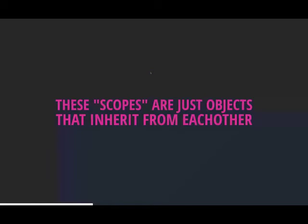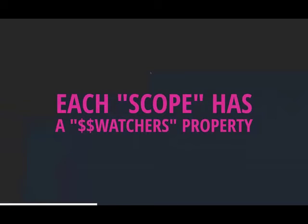These scopes are objects that inherit from each other. Isolate directive scopes break this inheritance chain. Each scope — from ng-app, ng-controller, ng-repeat — has something called $$watchers. In a large application you might have a few hundred scopes per view. You can inspect them: console.log($scope) and expand the object to see the watchers bound to that scope — useful for debugging.